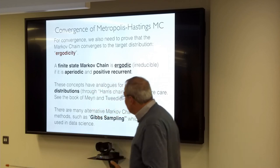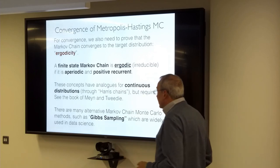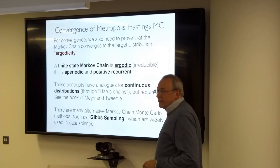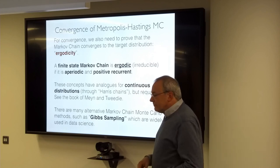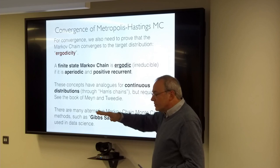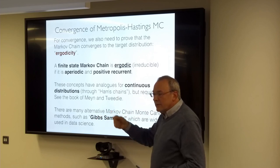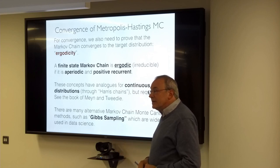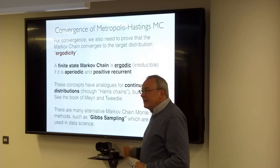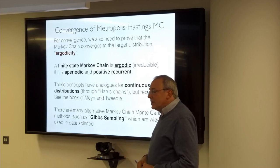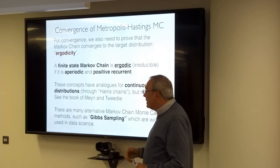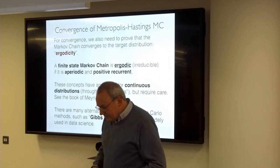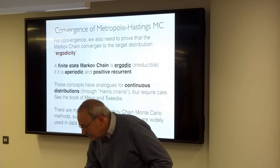In addition to Metropolis-Hastings, there are other methods. One very popular in data science is Gibbs sampling, where you hold most variables constant and resample one at a time, making a scalar process. This is nice for implementing steps, but it can be very inefficient. There are many cases where Gibbs sampling is not the method of choice — it's just a simple one to implement.